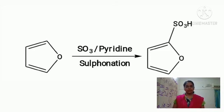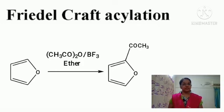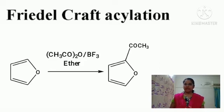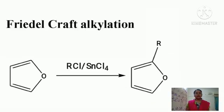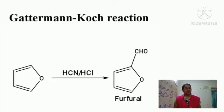Next is the Friedel-Crafts acylation of furan: when furan reacts with acetic anhydride in the presence of BF₃ (boron trifluoride) and ether as solvent, we get 2-acetylfuran as the product. When furan is treated with an alkyl halide (alkyl fluoride) in the presence of stannous chloride, we get 2-alkylfuran as the product — this is the Friedel-Crafts alkylation reaction.